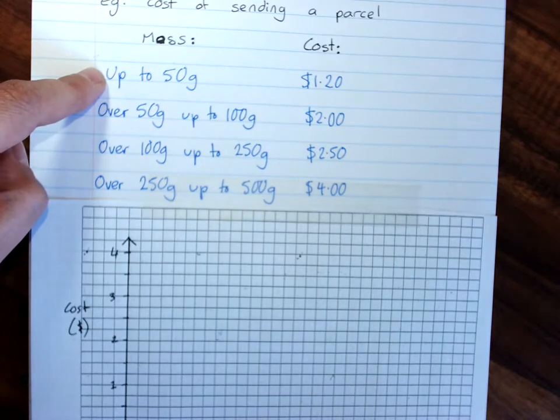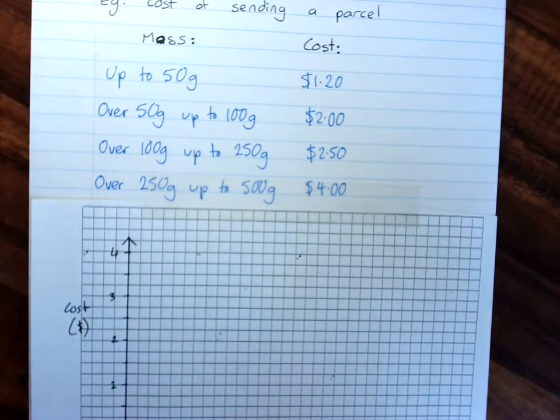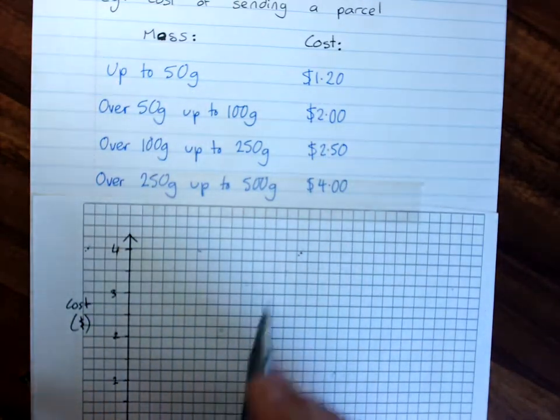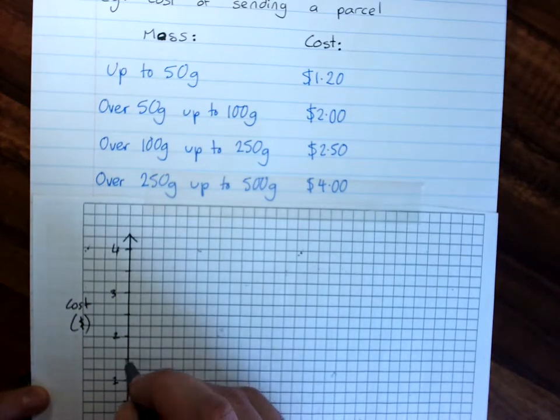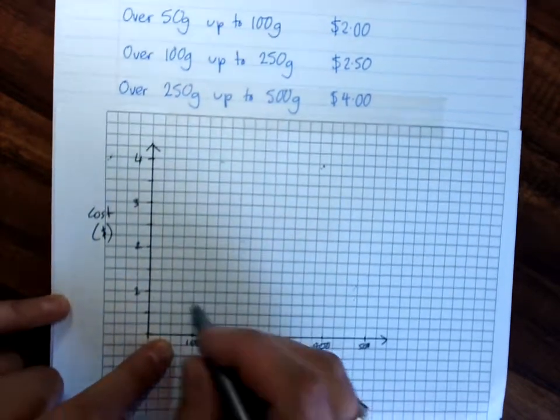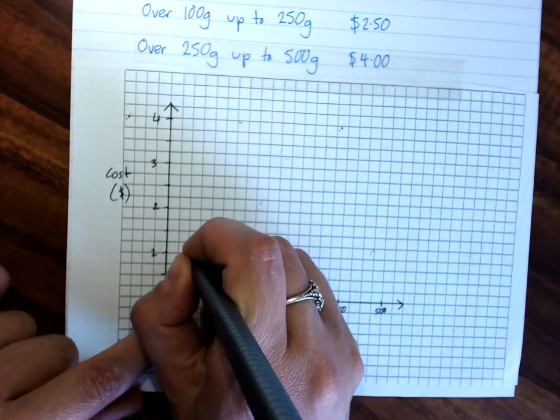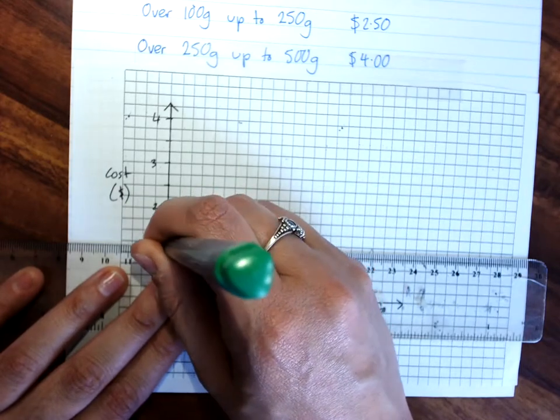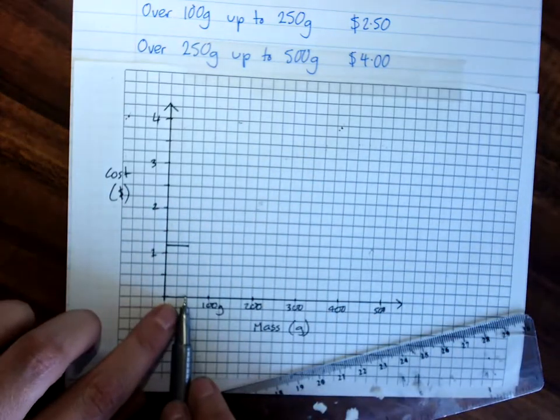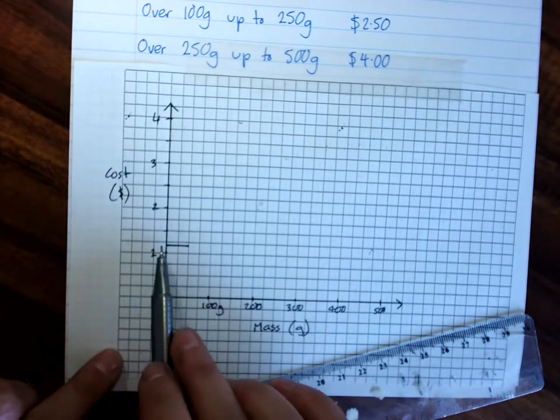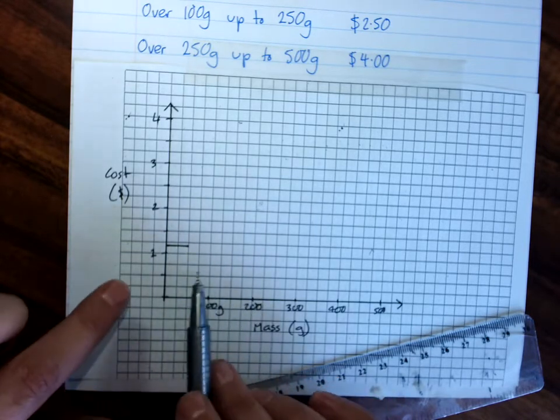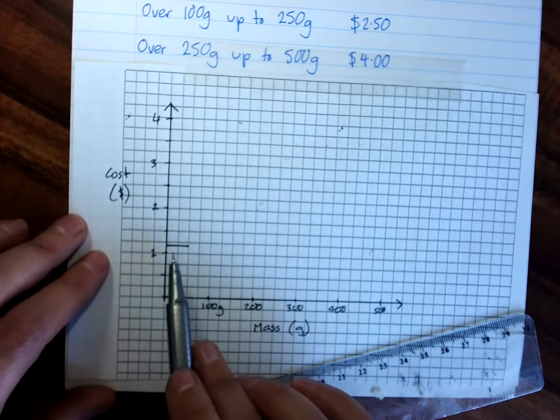Okay, so, we use a line up to 50 grams is $1.20. So, that's $1.50, $1.20. So, we will have a line, just trying to be very careful to show you exactly what I'm doing here. So, there's my line, because this is 50 grams here, and that's at $1.20.